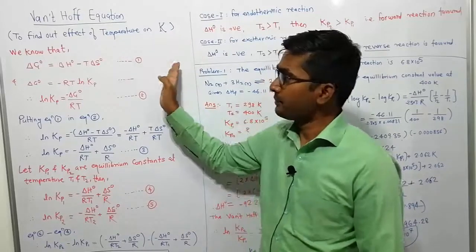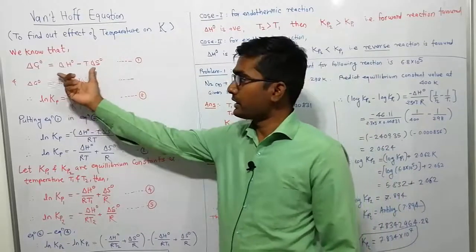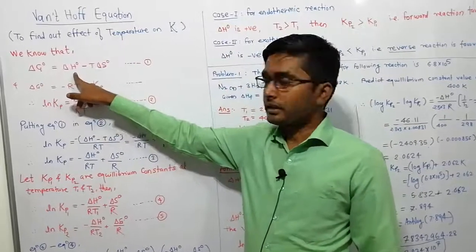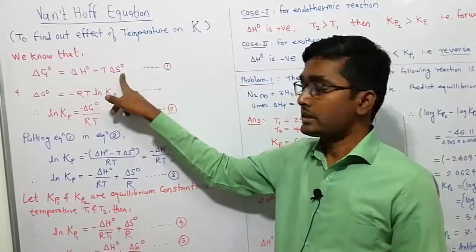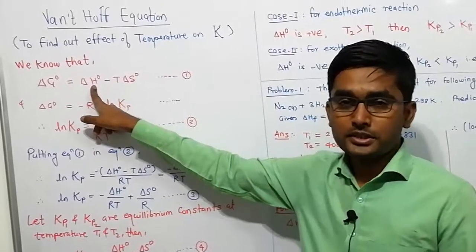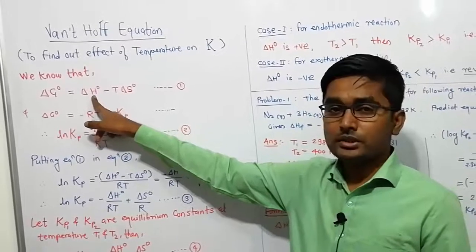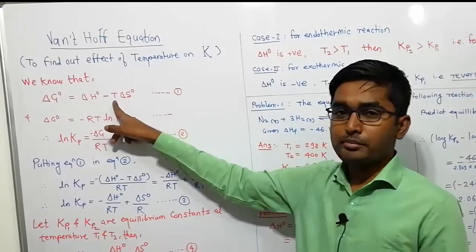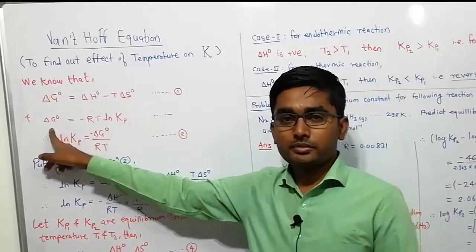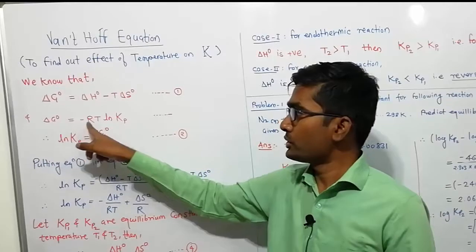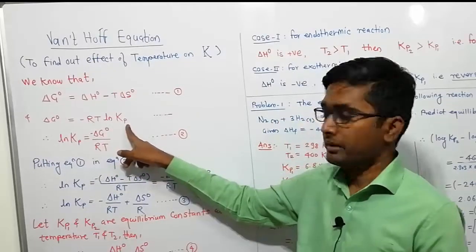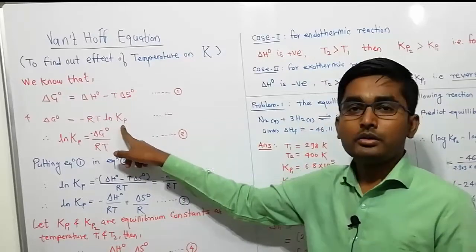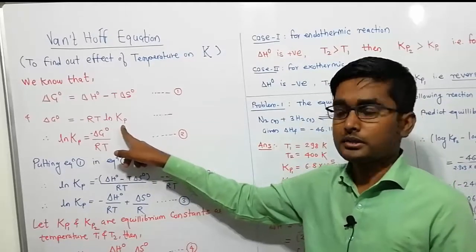In the previous lecture we have seen that ΔG⁰ — the change in standard free energy — is equal to ΔH⁰ minus T·ΔS⁰, where ΔH⁰ stands for standard change in enthalpy, ΔS⁰ for standard change in entropy, and T stands for temperature. Also, the second equation for standard free energy change is ΔG⁰ = −RT ln Kp, where Kp is the equilibrium constant when concentration terms are expressed in pressure units.